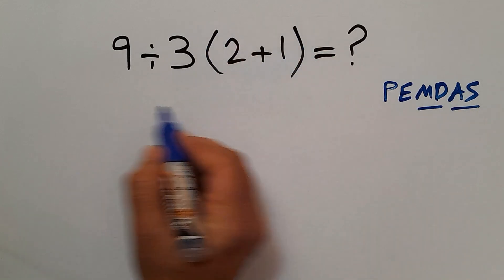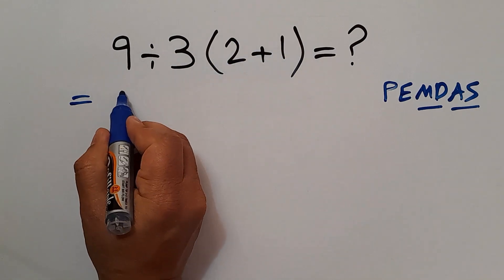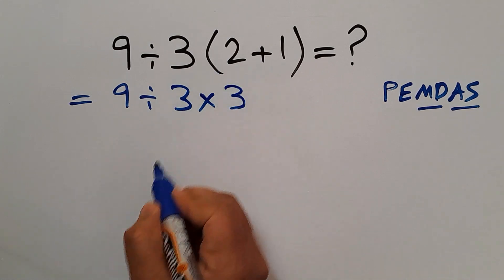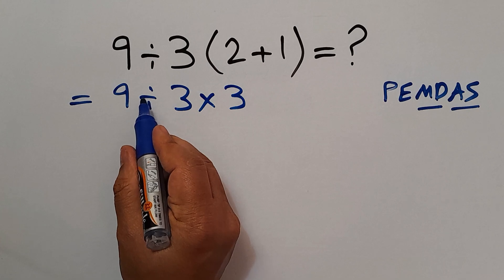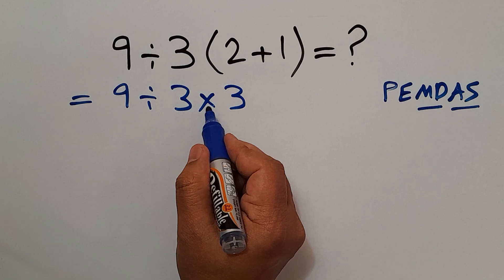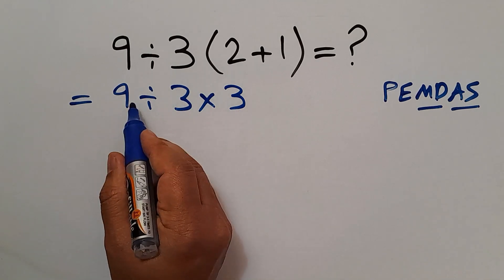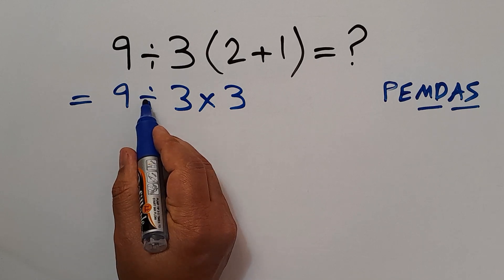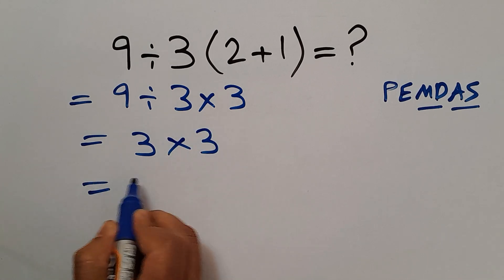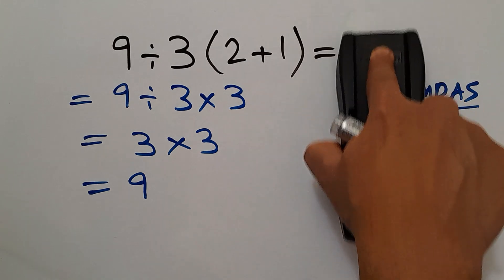Here, first we do the parentheses. 2 plus 1 gives us 3. So, 9 divided by 3 times 3. Now we have this division and this multiplication. Division and multiplication have equal priority and we work from left to right. First, this division: 9 divided by 3 gives us 3. And 3 times 3 equals 9. So, our final answer to this problem is just 9.